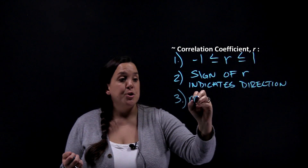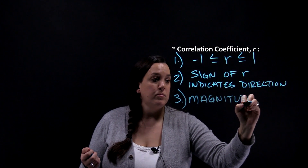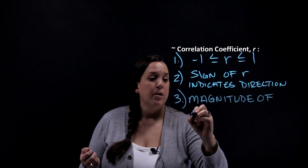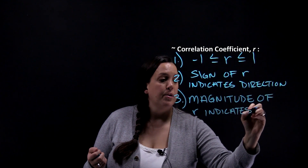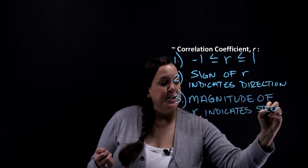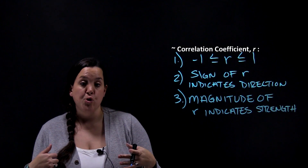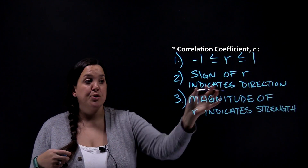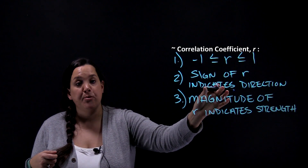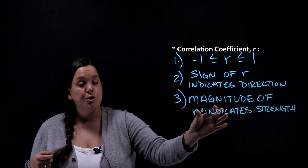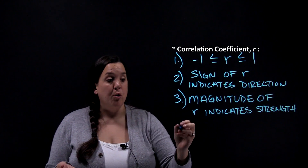The third rule is that the magnitude of r is going to indicate strength. That means if you take the absolute value of r, the closer it is to one, the stronger the relationship is. The sign does not have to do with strength — the sign only indicates the type of association. The magnitude, or absolute value, being closer to one makes it a stronger relationship.